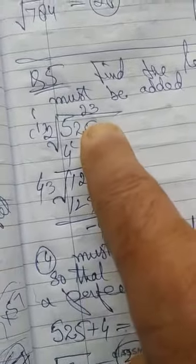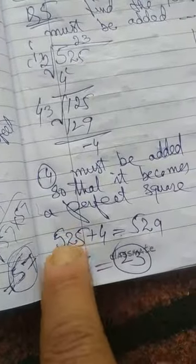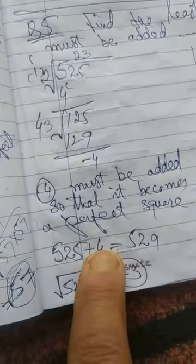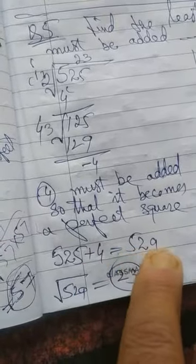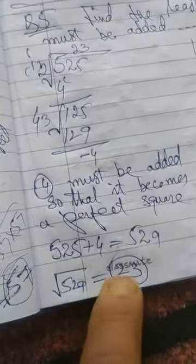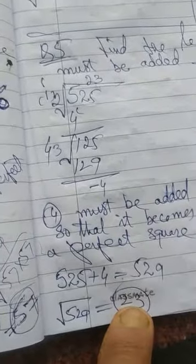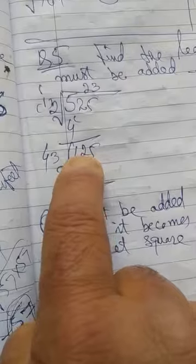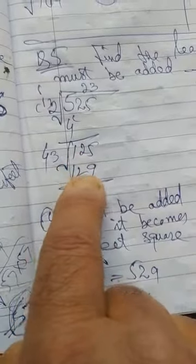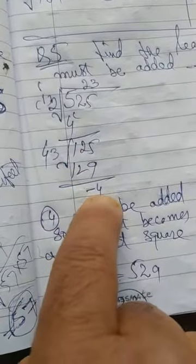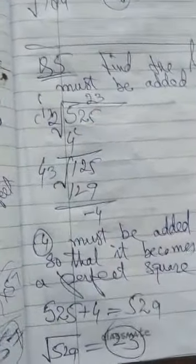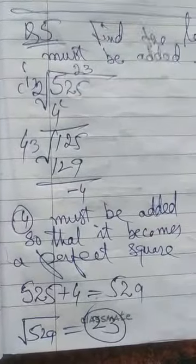Working through: four goes here. If we add 4, we get 525 plus 4 equals 529. So 4 must be added to 525 to make 529, which equals 23 times 23.